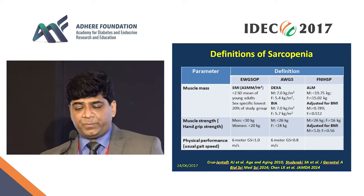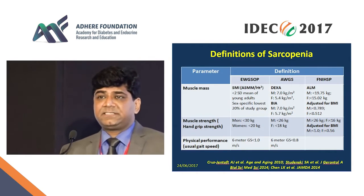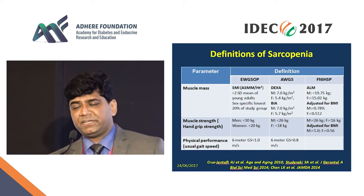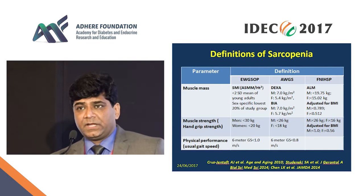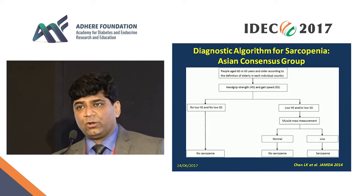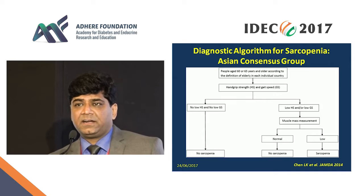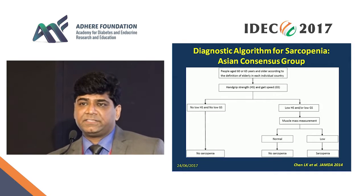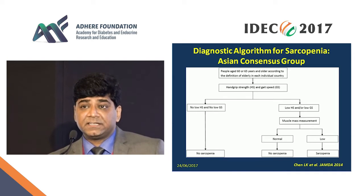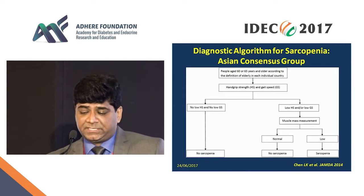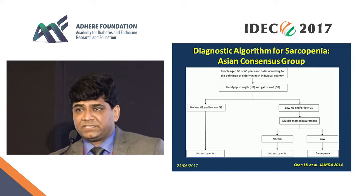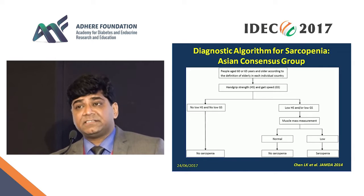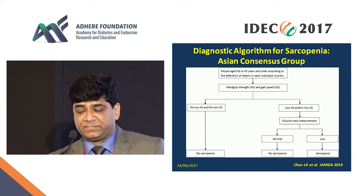Sarcopenia, insulin resistance, and obesity are all very closely interrelated. All three are associated with increasing age. Sarcopenia in the presence of obesity is defined as sarcopenic obesity.